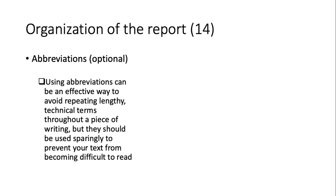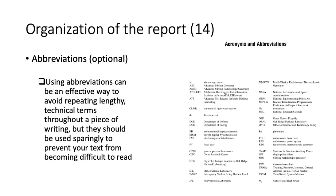Another optional part of your report is a list of abbreviations. You can use this as an effective way to avoid repeating lengthy technical terms throughout your report, but abbreviations should be used sparingly to prevent your text from becoming difficult to read. On the right side of this slide, you can see typical examples of acronyms and abbreviations.